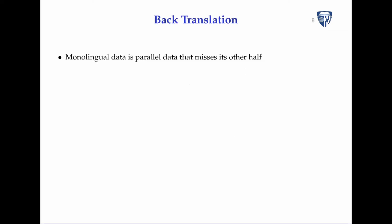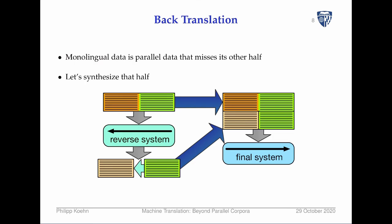The more common technique to deal with monolingual data is back translation — a bit of a hacky solution, but it works. The idea is that monolingual data is basically parallel data that misses its other half. If you have monolingual data in the target language, it's parallel data that just needs the source. So how do we get the source? We synthesize that half.